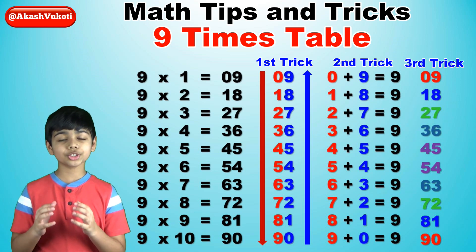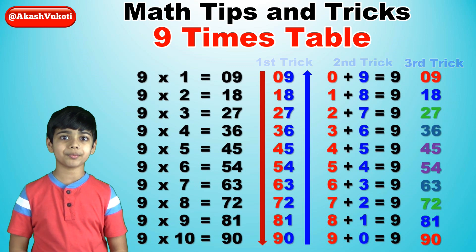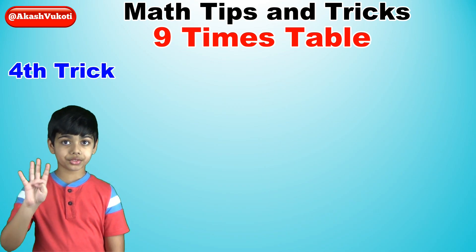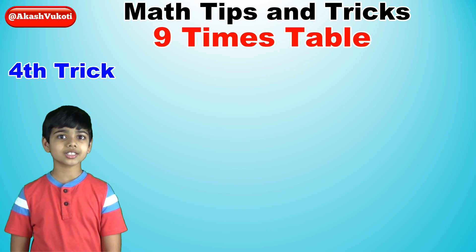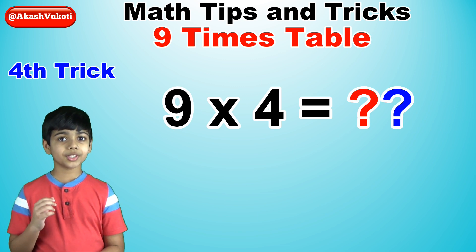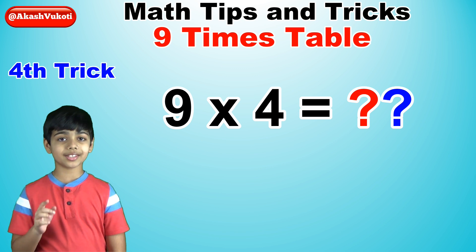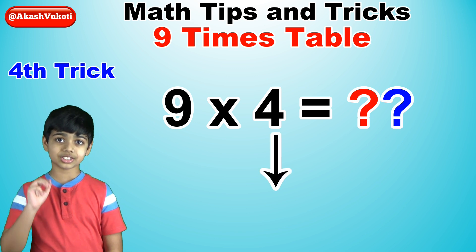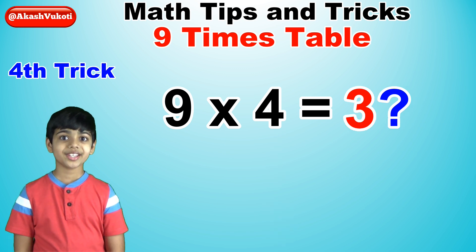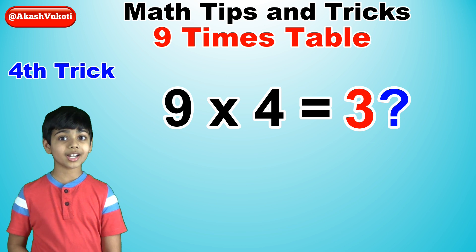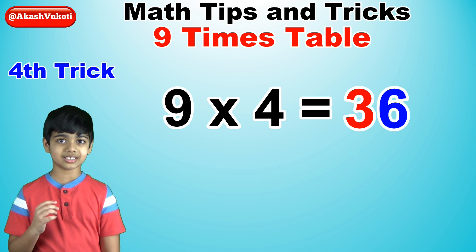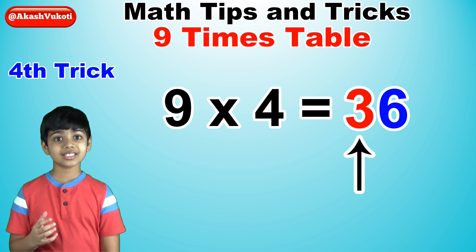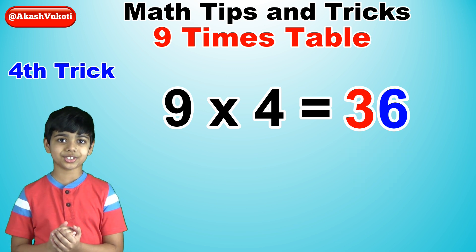These are three super easy tricks to memorize the 9 times table. However, there is the fourth trick, which is the quickest, fastest, and easiest way to remember the 9 times table. Here it is. Say you want to multiply 9 times 4. What you have to do is take that number 4 and find the number before it, which in this case is 3. This number is the first digit. The last digit is found by subtracting this number from 9. So 9 minus 3 is 6. The answer is 36.